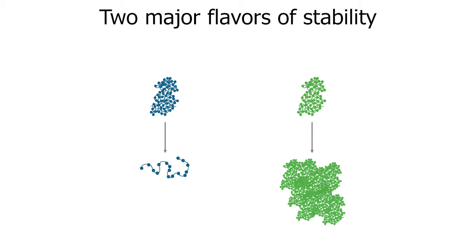When thinking about the stability of a protein, we can summarize it as two different options: conformational and colloidal. Conformational stability, shown in blue on the left, is the ability of a protein to stay folded in its native state. Examining a protein's fluorescence is one way to gain insight into conformational stability and is an easy way to examine thermally induced unfolding. Colloidal stability, shown in green on the right, can be thought of as the aggregation behavior of a protein. Gathering size information from static and dynamic light scattering can inform understanding of a protein's colloidal stability. Both behaviors combine to paint a fuller picture of protein stability.